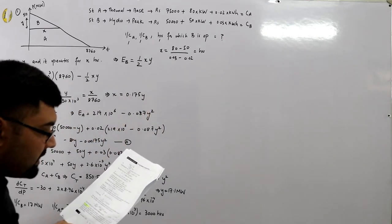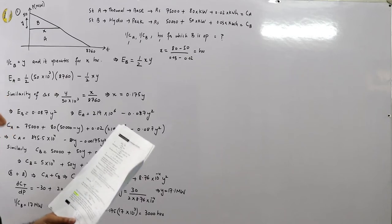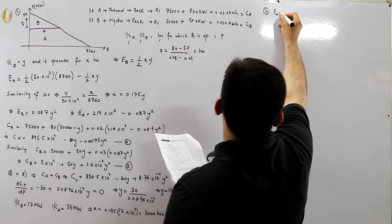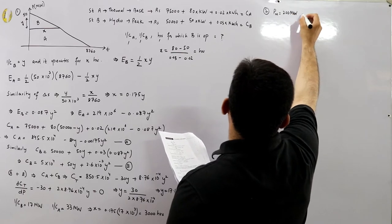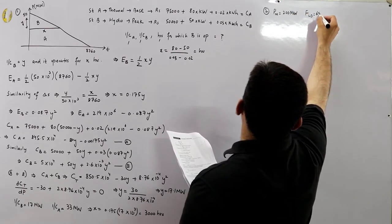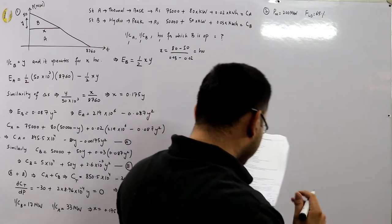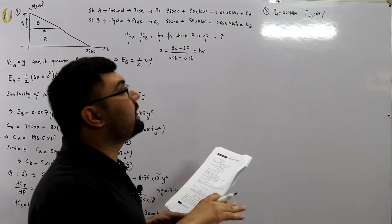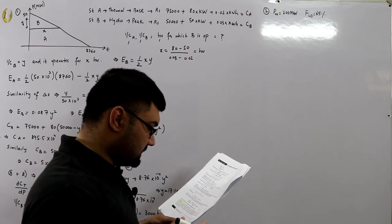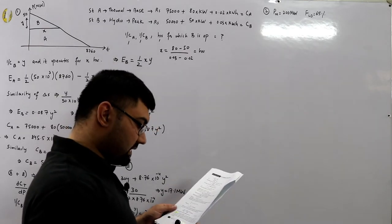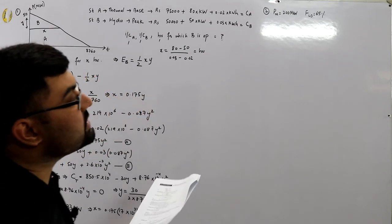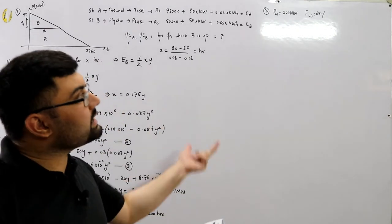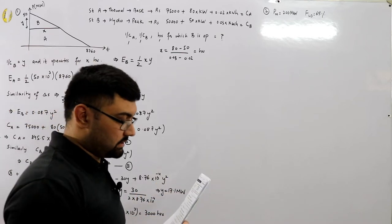Example number two: a load center has a maximum demand of 200 megawatts operating at a load factor of 65%. To supply the demand there are two options — either a thermal power station or a hydroelectric power station. Compare the options using the given data.